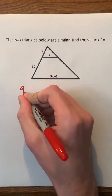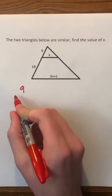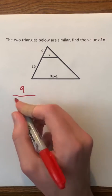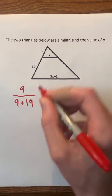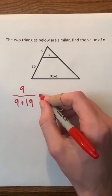We can start out by writing 9, which is the length of this side of the smaller triangle. And we're going to put it over 9 plus 19, which is the length of this side of the larger triangle.